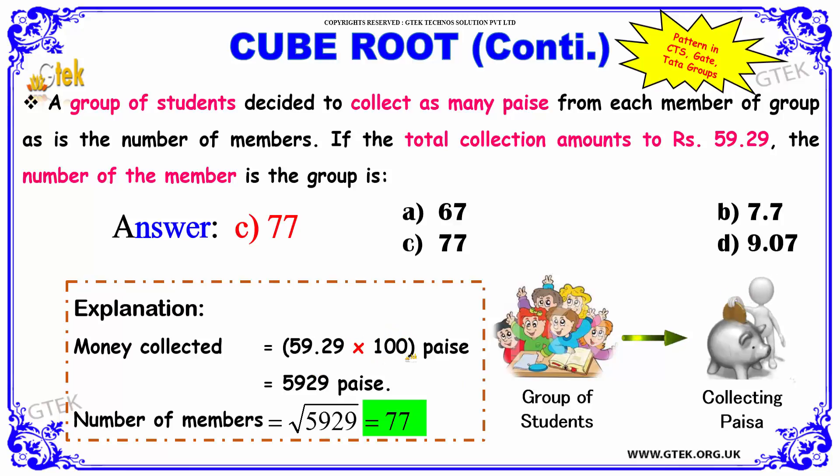Multiplied by 100 you get your rupees in terms of paise. That is 5929 paise.